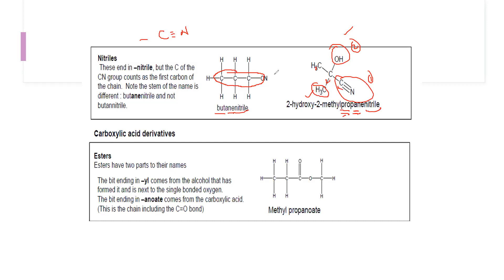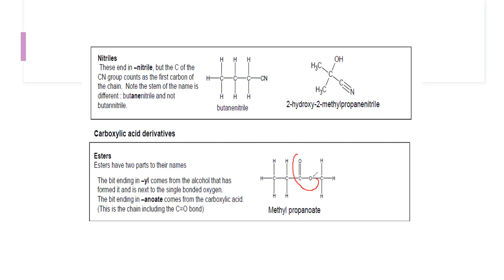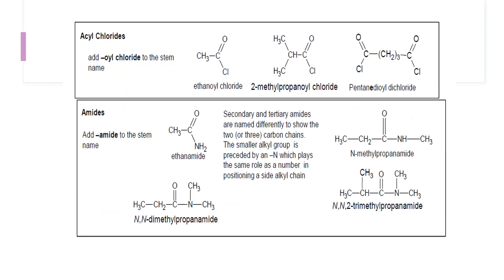Esters are carboxylic acid derivatives. For an ester (C=O with O), the part attached to the oxygen is named first, then the carbon-chain part. One carbon attached to oxygen gives 'methyl'; three carbons in the chain give 'prop'; and the ester suffix is '-anoate'. So the name is methyl propanoate.